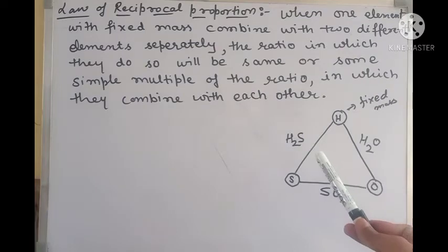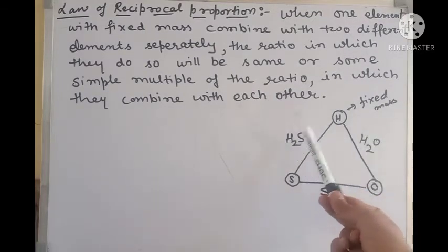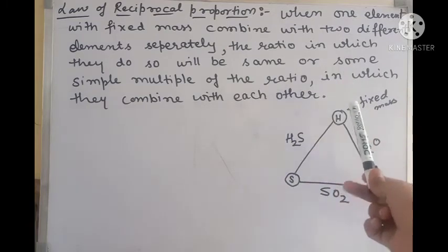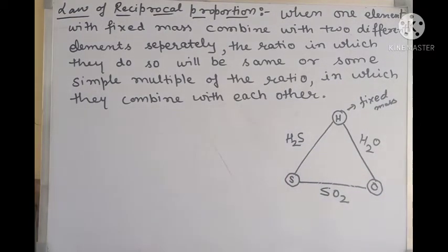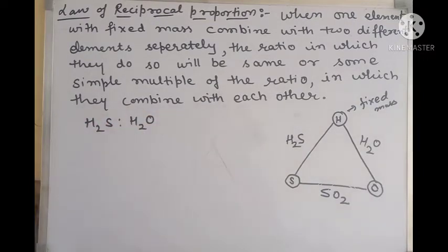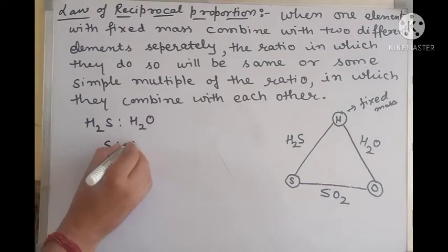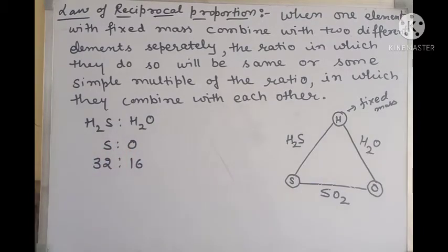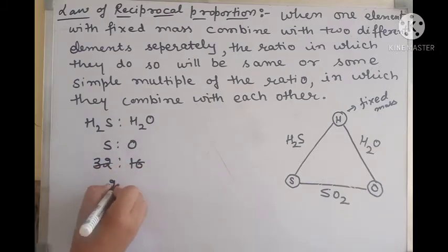Now the ratio in which they do so - the ratio in which sulfur and oxygen combine with fixed mass of hydrogen, will be same or some simple multiple of the ratio in which they combine with each other. So the ratio in which they combine with each other - we have to find the ratio between the sulfur and the oxygen. So we have sulfur 32 parts and oxygen 16 parts, so the simplest ratio comes out to be 2 ratio 1.